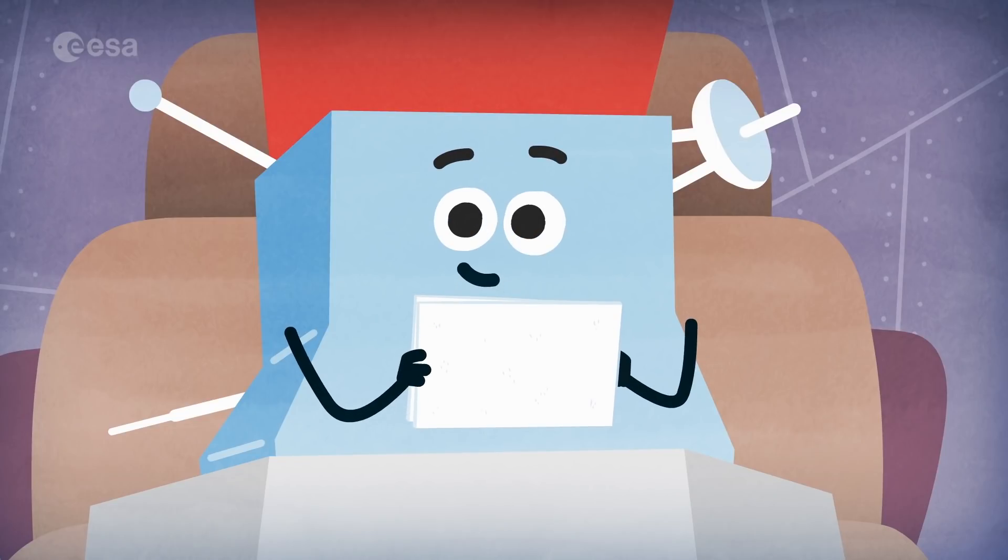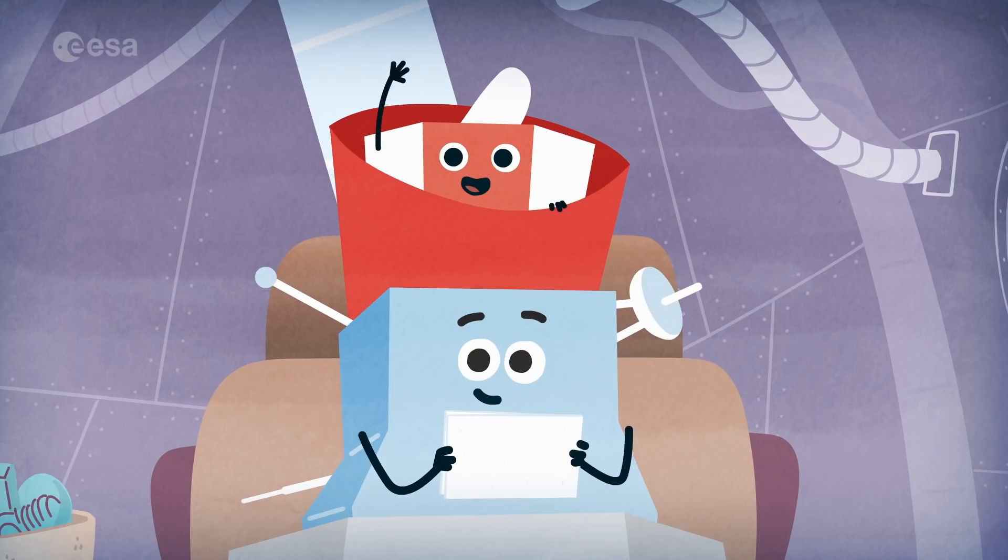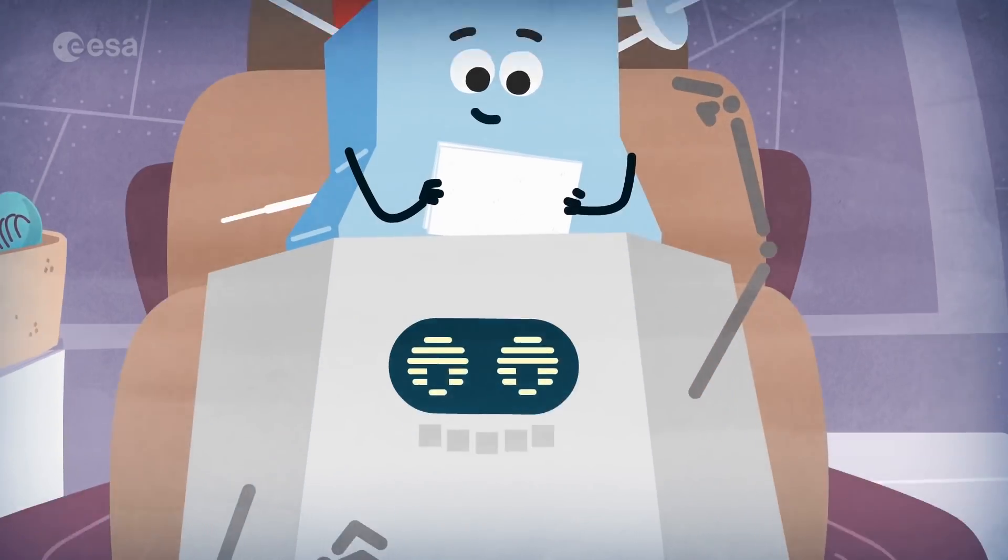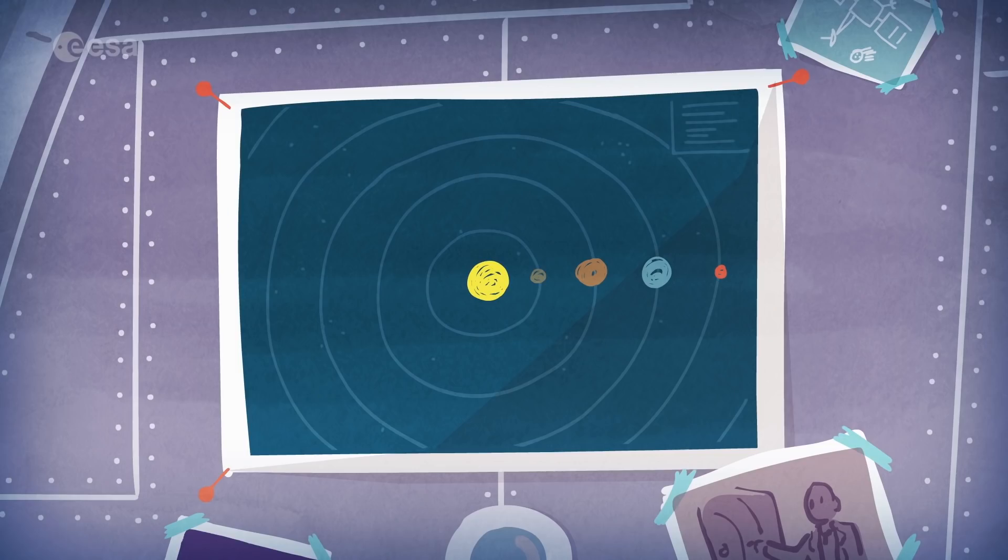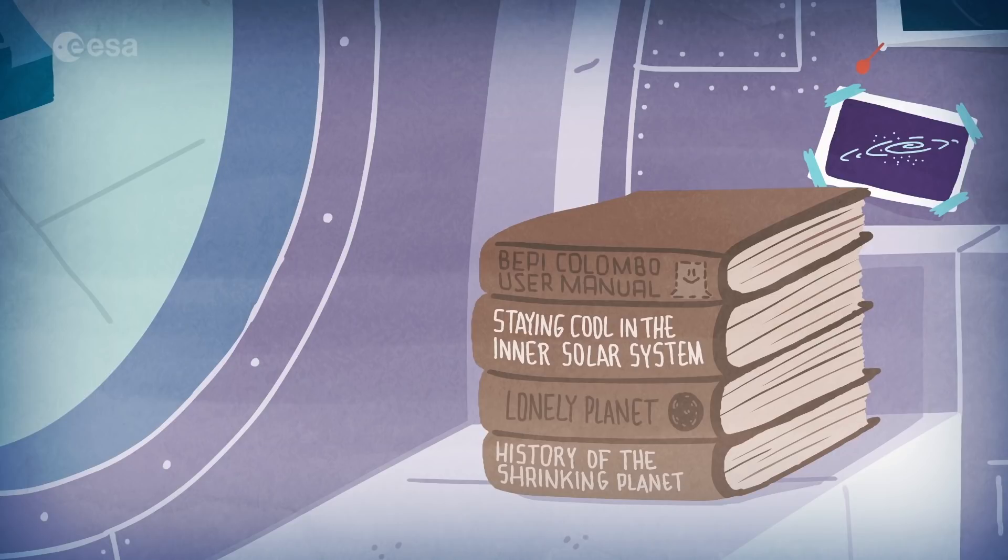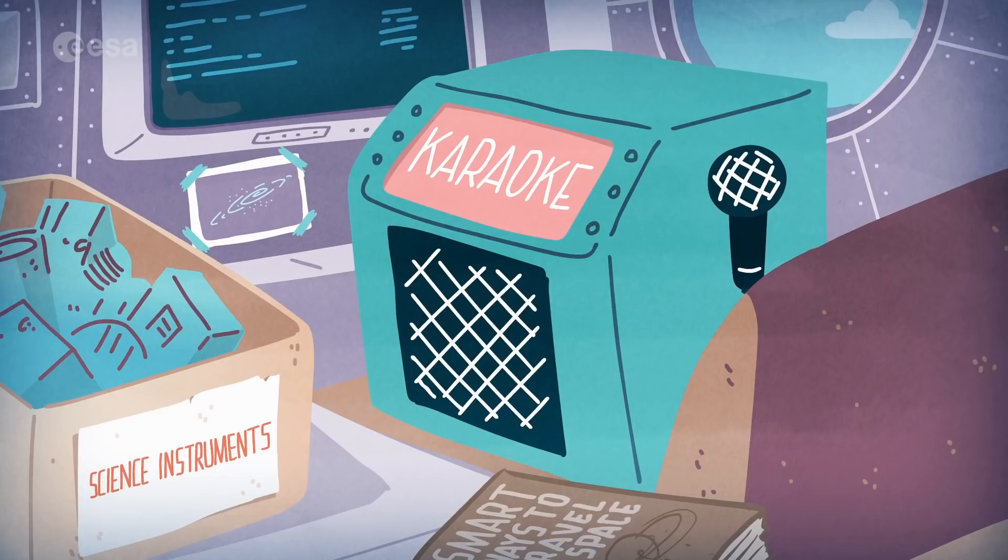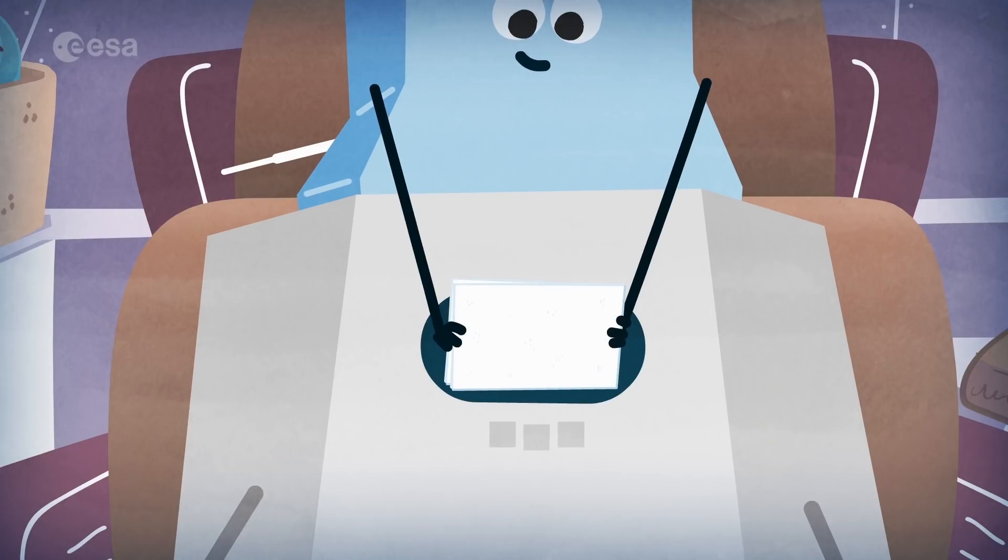I'm Bepi and together with Mio, up there, we're going on a great adventure through the inner solar system to planet Mercury. But let's not forget about our robot friend MTM, who, after this ride on the rocket, is going to carry us all the way there. A journey that will take seven years, flying past other planets along the way. We certainly didn't pick Mercury because it's the most hospitable destination out there, but because there are still so many unsolved questions about this mysterious world.